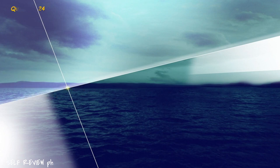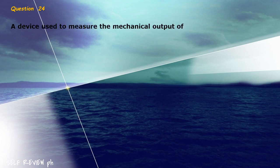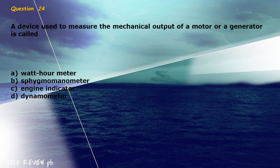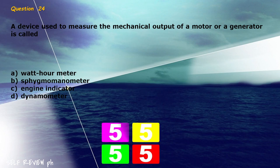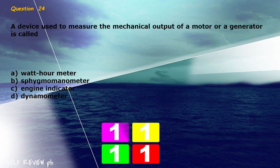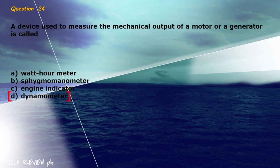Question 24: A device used to measure the mechanical output of a motor or a generator is called blank. A) watt-hour meter, B) sphygmomanometer, C) engine indicator, D) dynamometer. The correct answer is letter D, dynamometer.